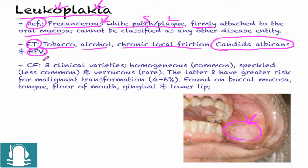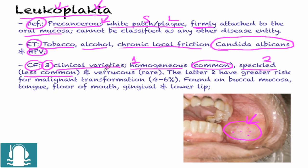The clinical features include three varieties. The first is homogeneous, which is the common type. The second is speckled — meaning there are a few dots — which is less common. The third is verrucous, which is rare. The latter two, speckled and verrucous, have a greater risk for malignant transformation, meaning they are much more likely to grow rapidly and spread to other areas.